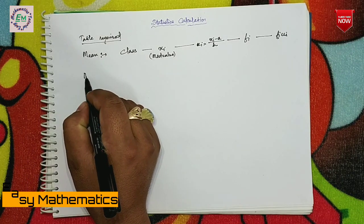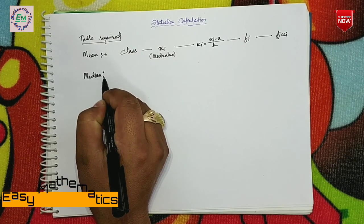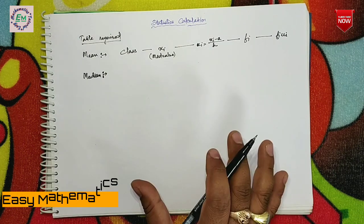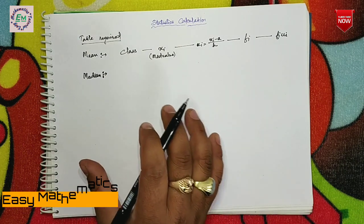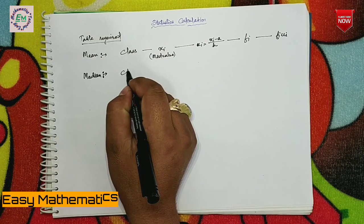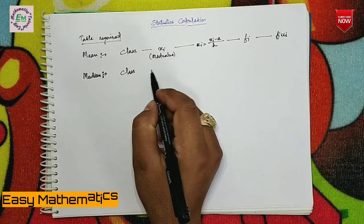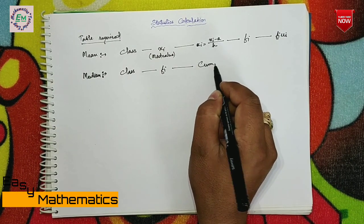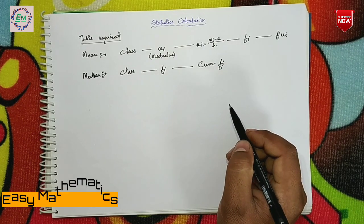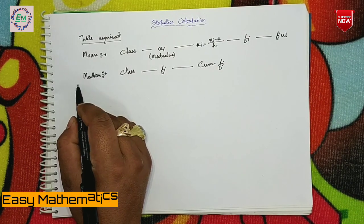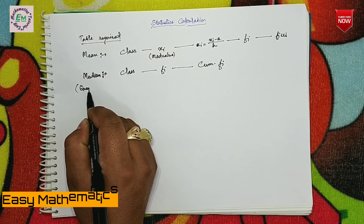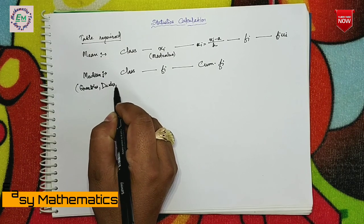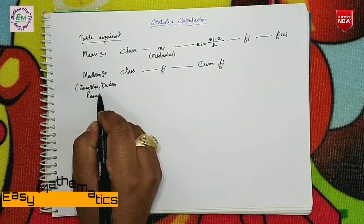If you have a median, you can see the median. If you have a quartile and percentile, then you can see the median. If you have a class, you can see the frequency, and the cumulative frequency is the same. Then the median is the same as quartiles, deciles, and percentiles.